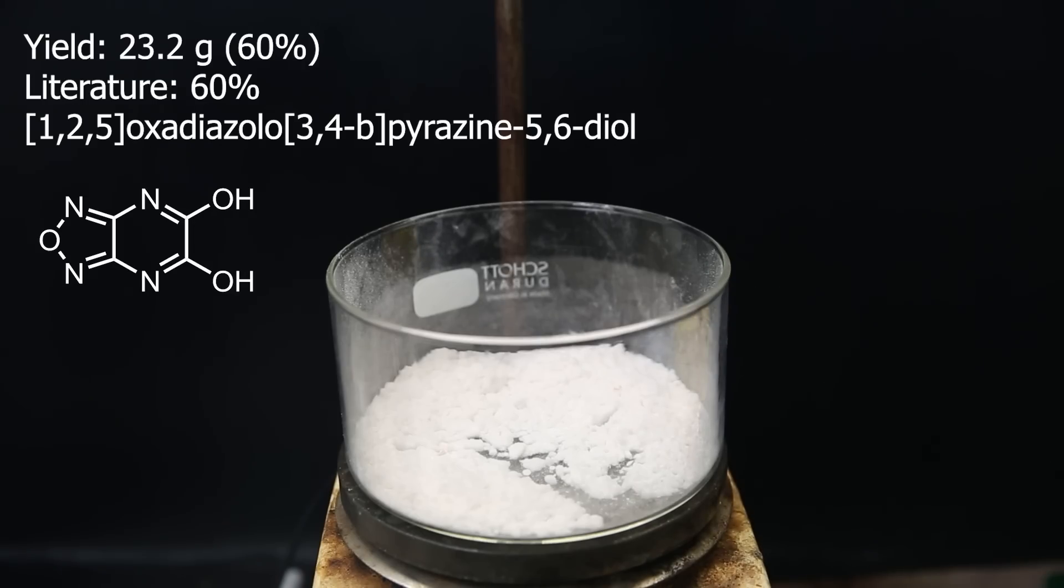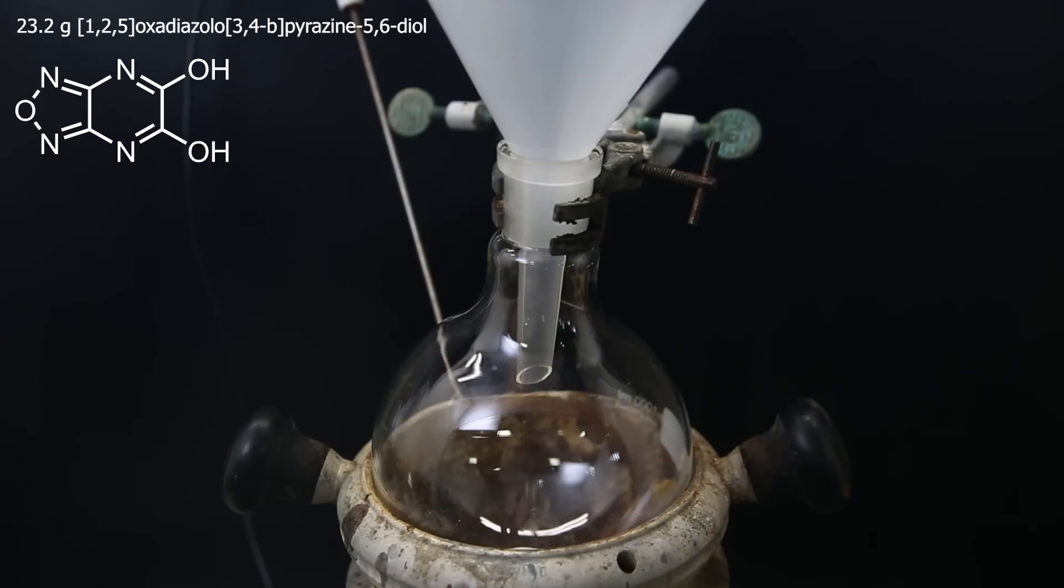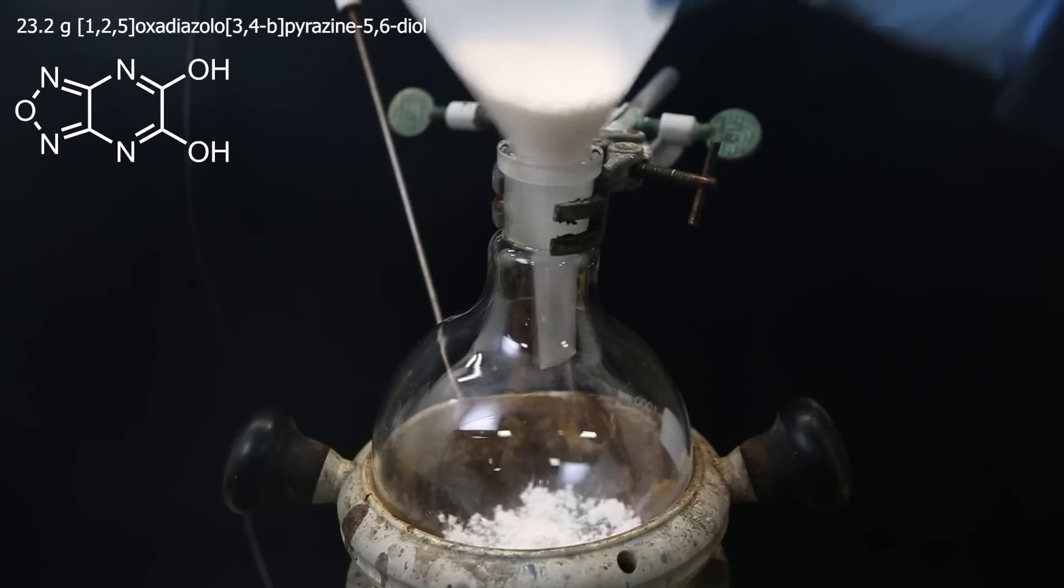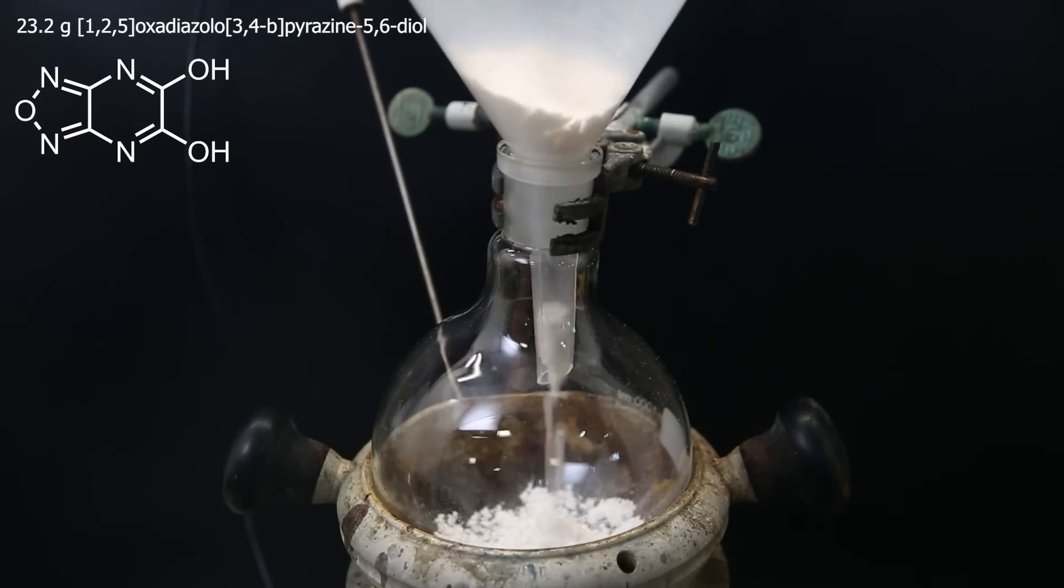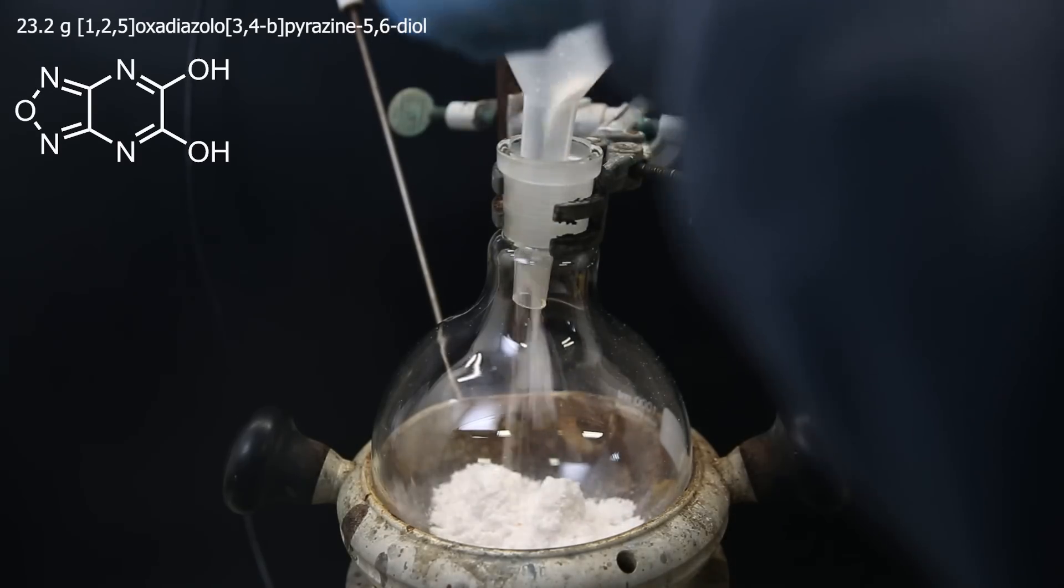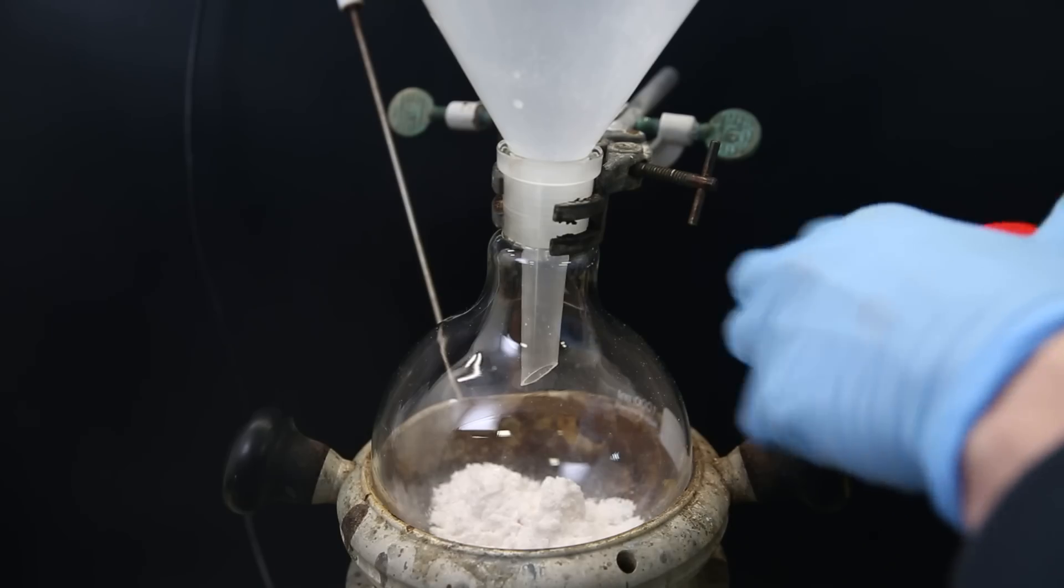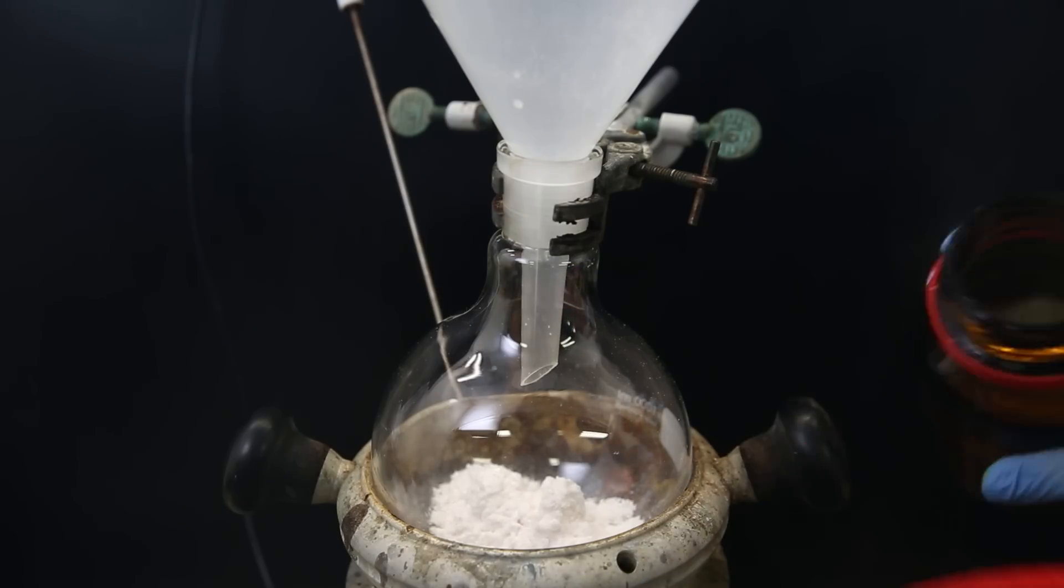Moving on to the next step, I have to replace the hydroxyl groups with chlorine, so I move all of the materials into a large flask in a heating block. There are many different ways to replace alcohols with chlorines, but here they specifically use a mixture of phosphoryl chloride and phosphorus pentachloride, so I guess I'll have to do that too.